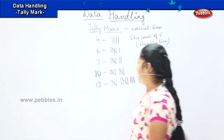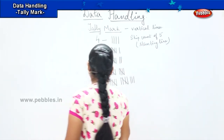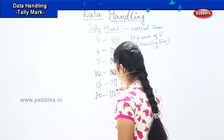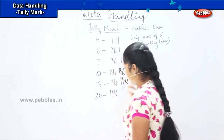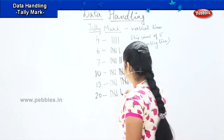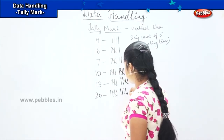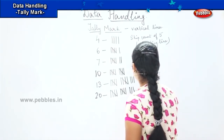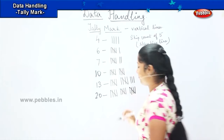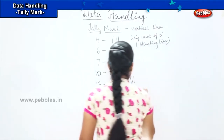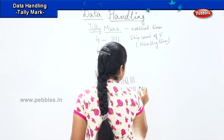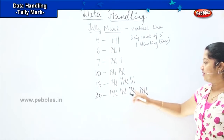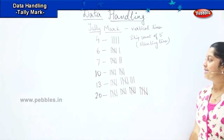Shall we do some more? Now tell me how will you draw 20? 1, 2, 3, 4, then a slanting line 5, then 6, 7, 8, 9. Again a slanting line 10, 11, 12, 13, 14, slanting line 15, then 16, 17, 18, 19, and a slanting line 20. So how many slanting lines did we have in all? 1, 2, 3, and 4. We had 4 slanting lines.